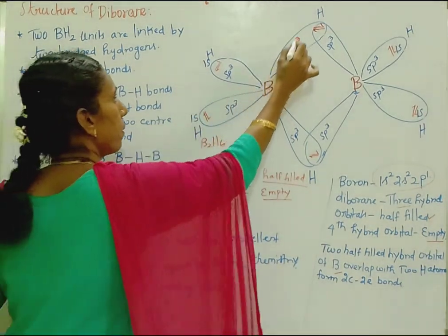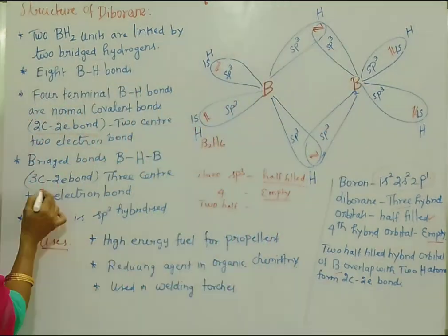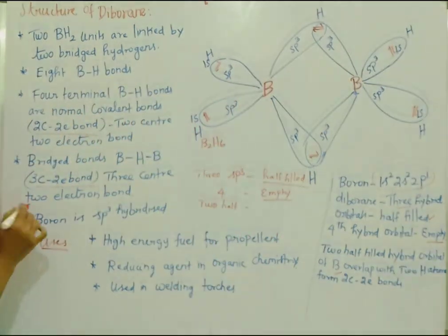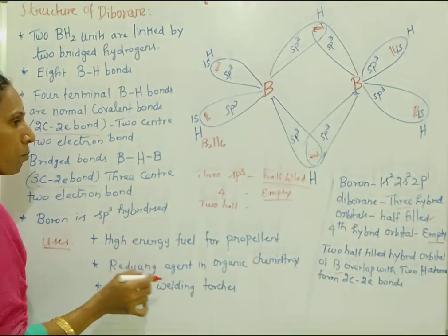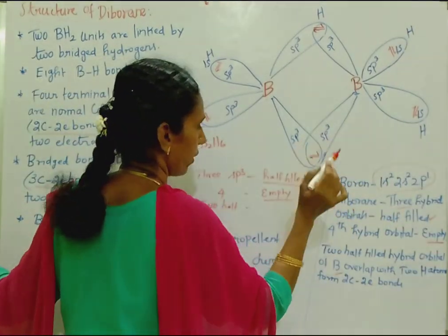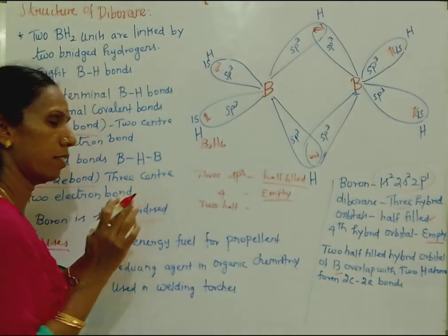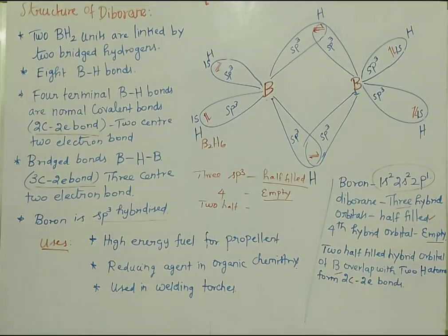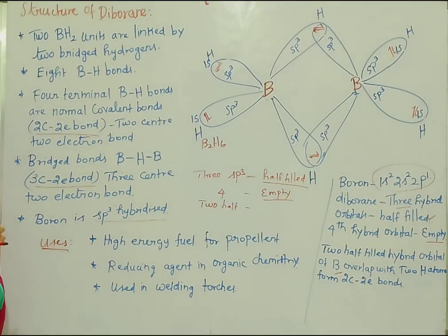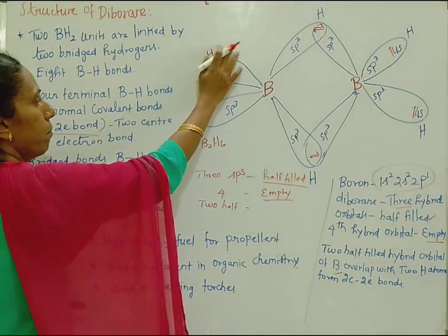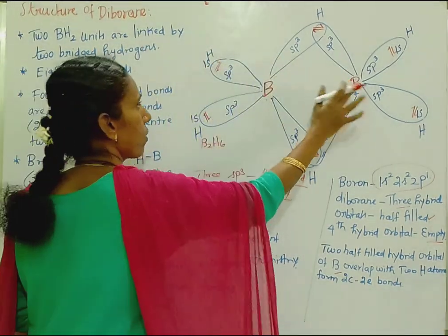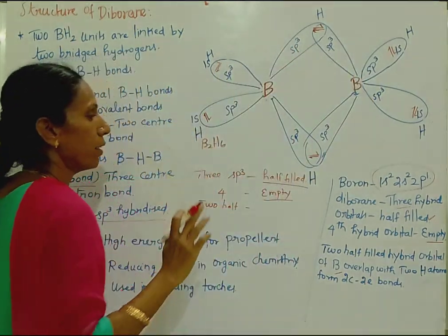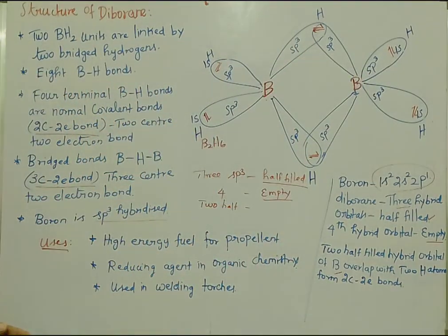This BHB bond is a 3-center, 2-electron bond — not a normal 2-center, 2-electron bond. This is how the BHB bridging bonds are formed in diborane.